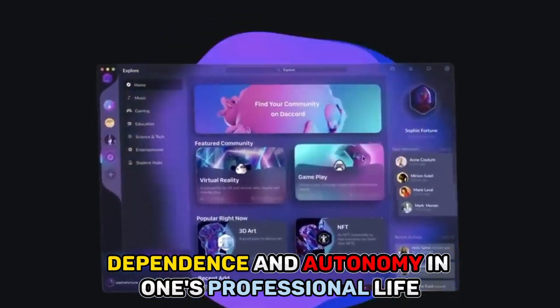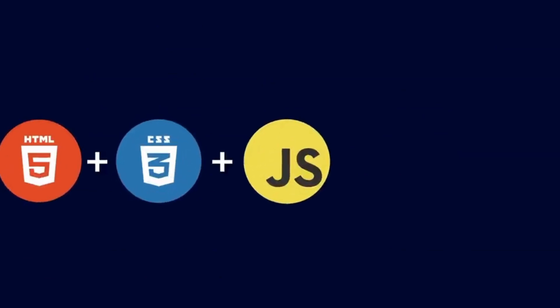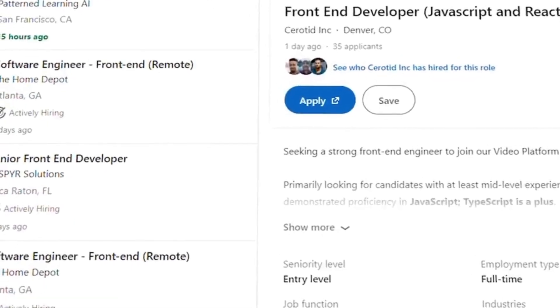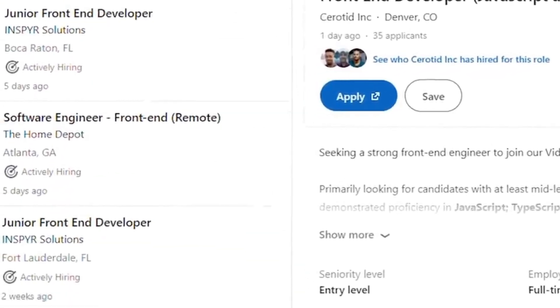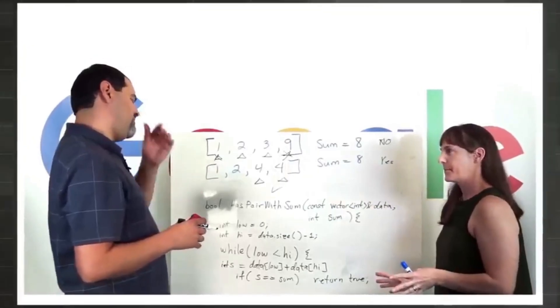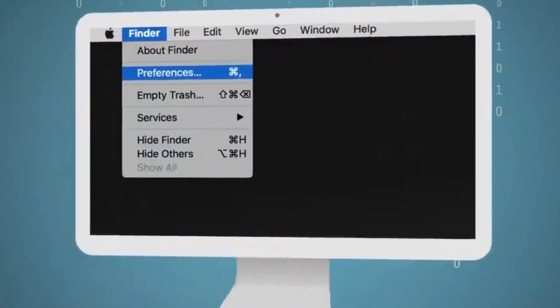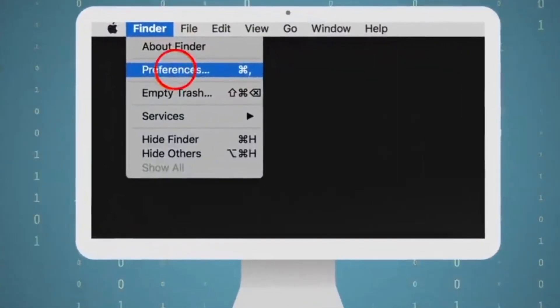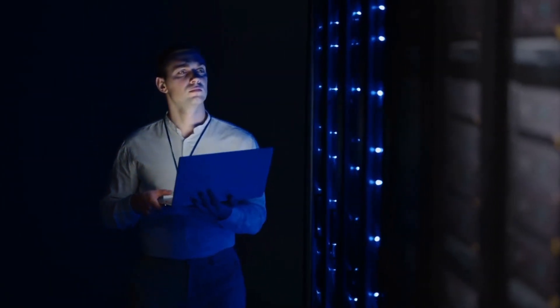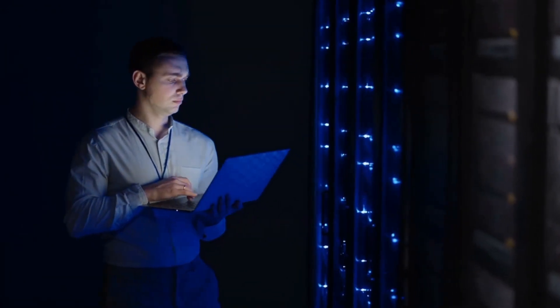Dependence and autonomy in one's professional life. Programmers could lose their independence and self-sufficiency if they place an unhealthy amount of reliance on the ChatGPT code interpreter, which could lead to a harmful dependency. When programmers give artificial intelligence the responsibility of interpreting their code, they give up control over their work, which reduces their capacity to make well-informed decisions and to take ownership of the projects they work on. This dependency not only lowers the overall quality of the code, but it also jeopardizes the sense of success and pride that comes from independently constructing software solutions.